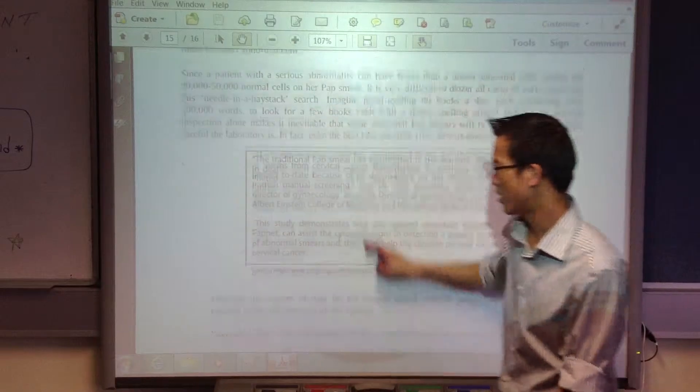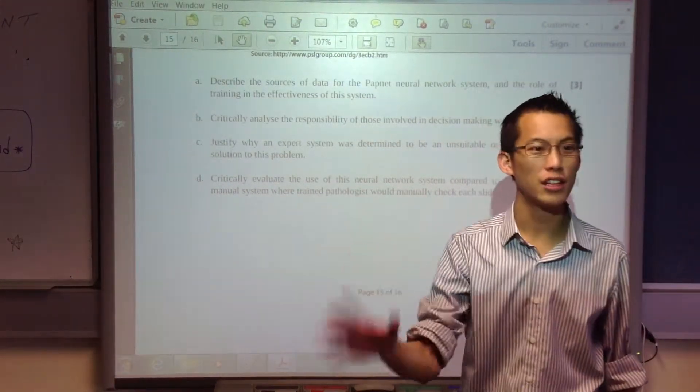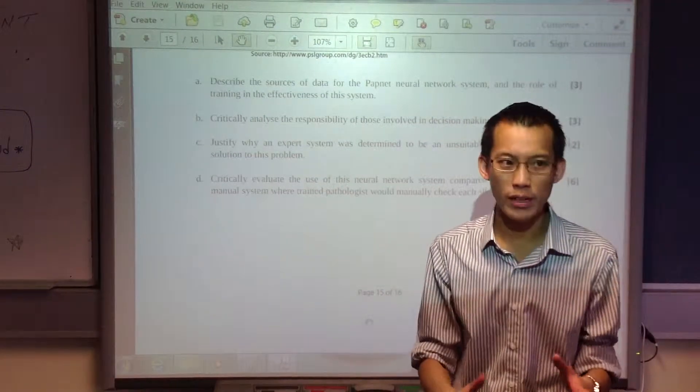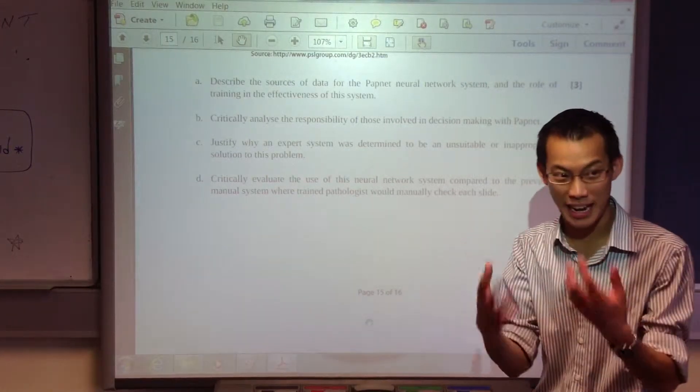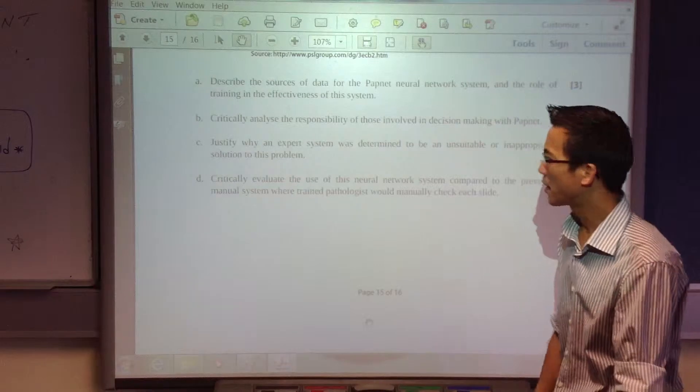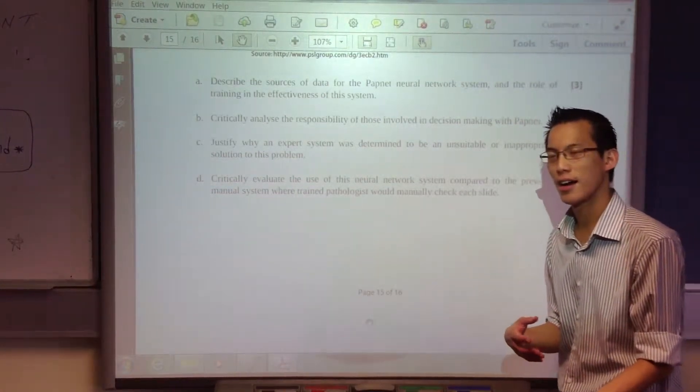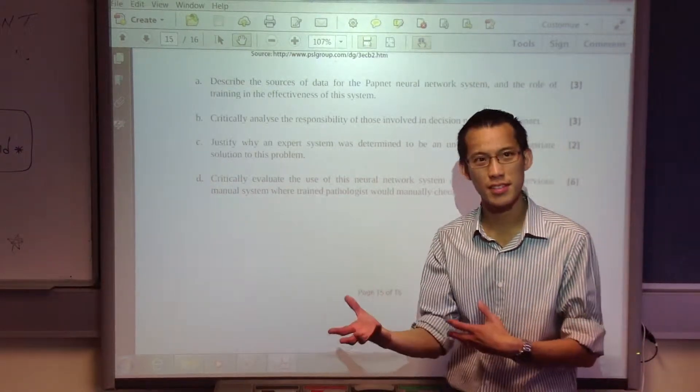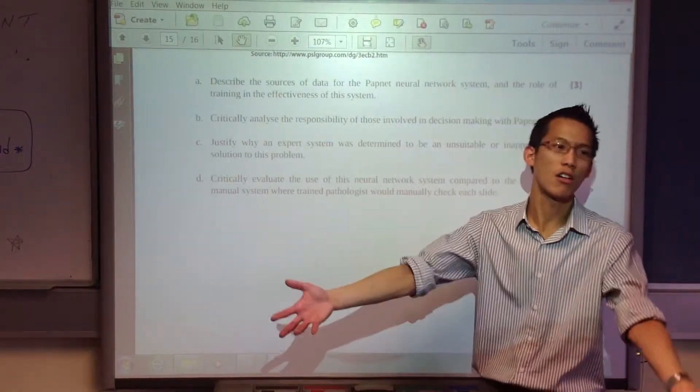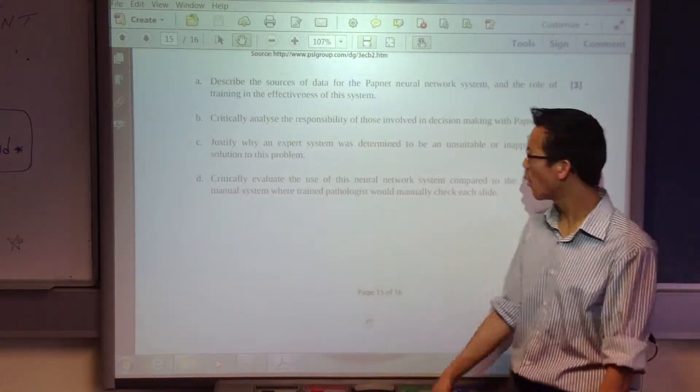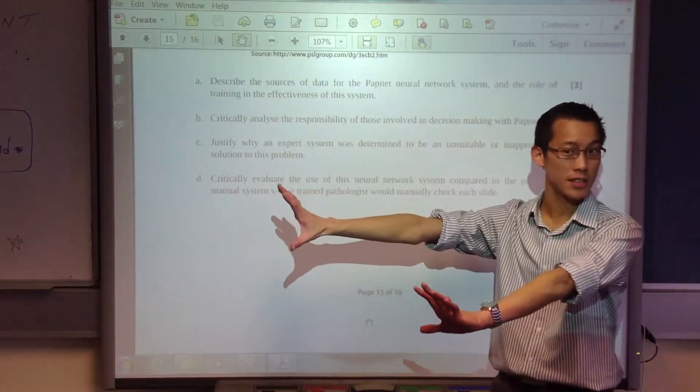So why is an expert system unsuitable? Everyone talked about the learning aspect, which is not really the point. I think out of two I was tempted to give you one if you explained that well, but it really was not the point. Because if it was about learning, an expert system can still, if you can program it well, if the rules are clear, if the logic is clear, it would just take you longer to design it. But it won't necessarily be unsuitable or inappropriate, like we can't possibly use an expert system for this situation.